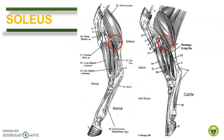Finally, the soleus. Soleus is an insignificant muscle except in pigs and in man. This muscle arises from the fibula and joins the lateral head of the gastrocnemius. It is present in horse and in cattle, and also present in cats, but this muscle is absent in dogs. The heads of the gastrocnemius and the soleus are collectively called the triceps surae.